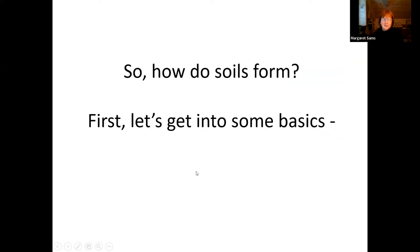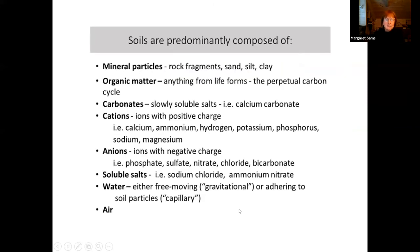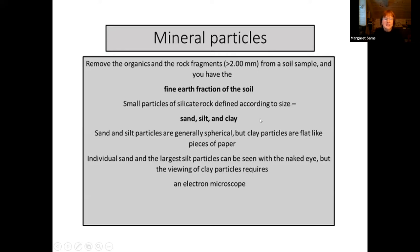So how do soils form? Soils are predominantly composed of mineral particles — rock fragments, sand, silt, and clay. We have organic matter from life forms, carbonates, cations, anions, soluble salts, water, and air. We need all those things in concert for the formation of soil. If you remove the organics and the rock fragments from a soil sample, you have what's called the fine earth fraction of the soil — small particles of silicate rock defined according to size: sand, silt, and clay.